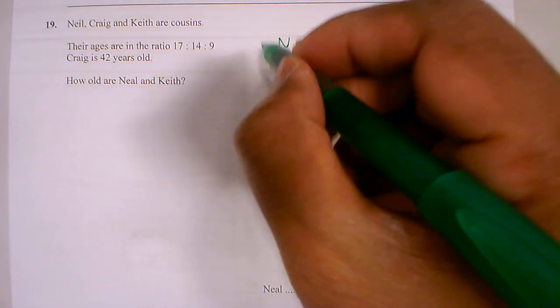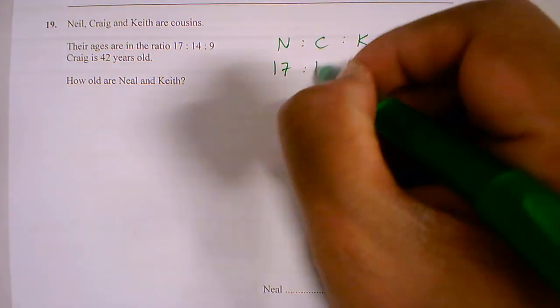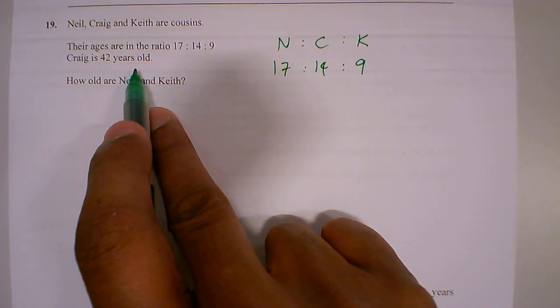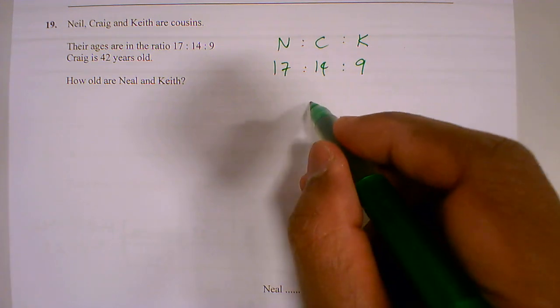The ages are in the ratio 17:14:9. Craig is 42 years old, so Craig is here. So this is 42.